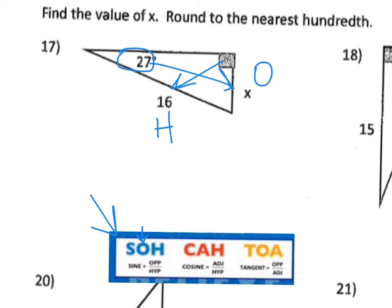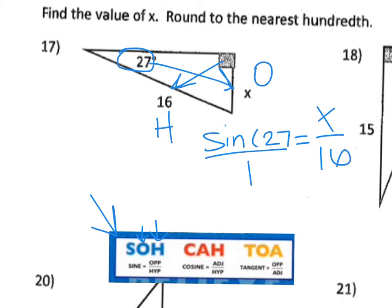I take the SINE of the angle measure given, so I can say that the SINE of 27 equals O over H, because I've determined that I have SOH. So O is X, and H is 16. Putting this over 1, I have a proportion I can solve for. I put in my calculator SINE of 27 — make sure to close the parentheses — so SINE of 27 times 16, and I get an answer of 7.26384.